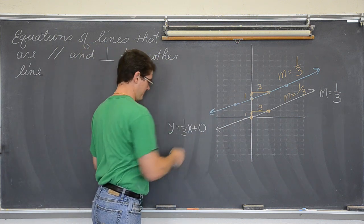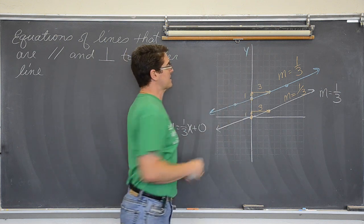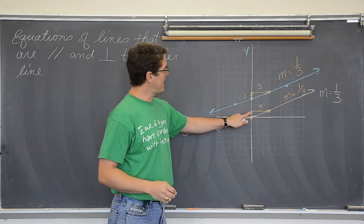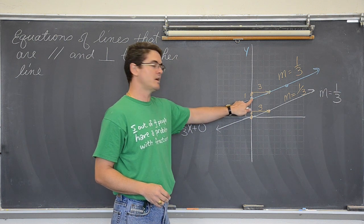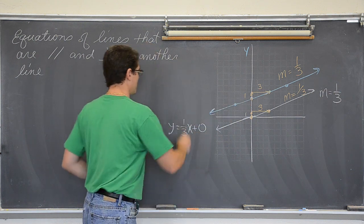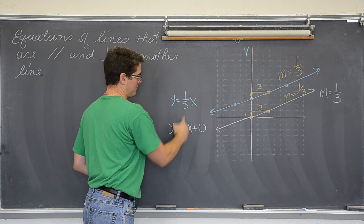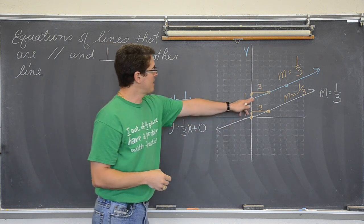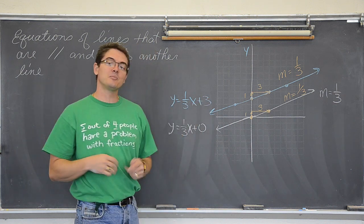Now the blue line that is parallel we can see crosses the y-axis. That is the y-axis that goes straight up and down at one, two, three. So y-value or y-intercept is at three. So this blue line's equation is y equals one-third x, same slope because they are parallel and we counted it out. But now y-intercept is three. So we have y equals one-third x plus three.